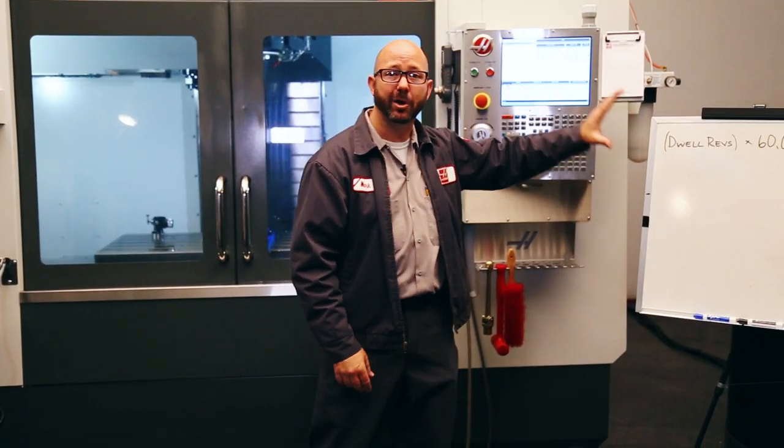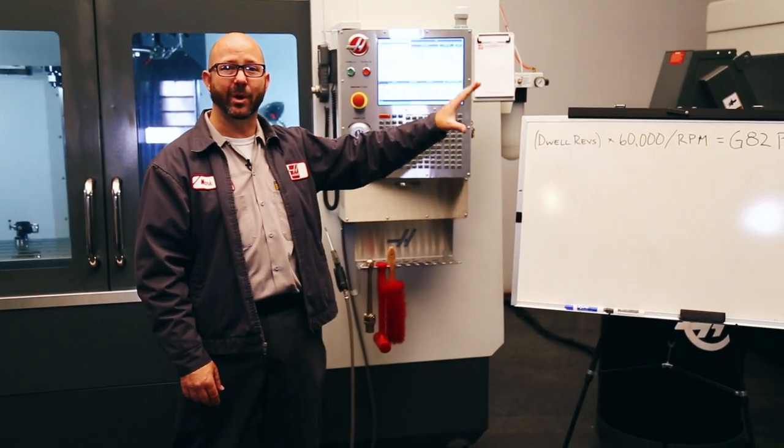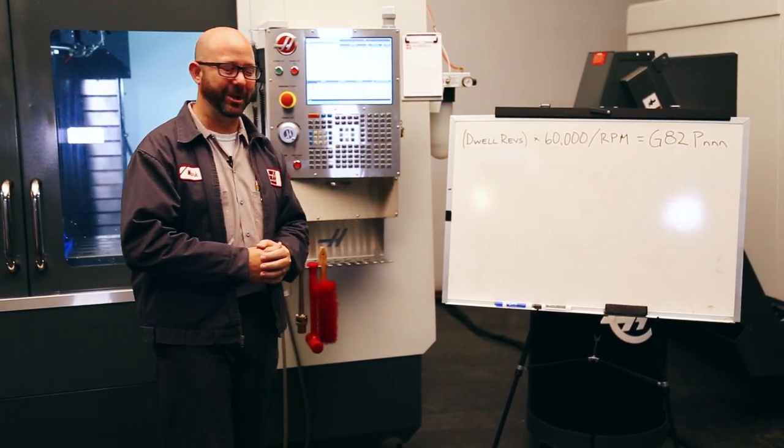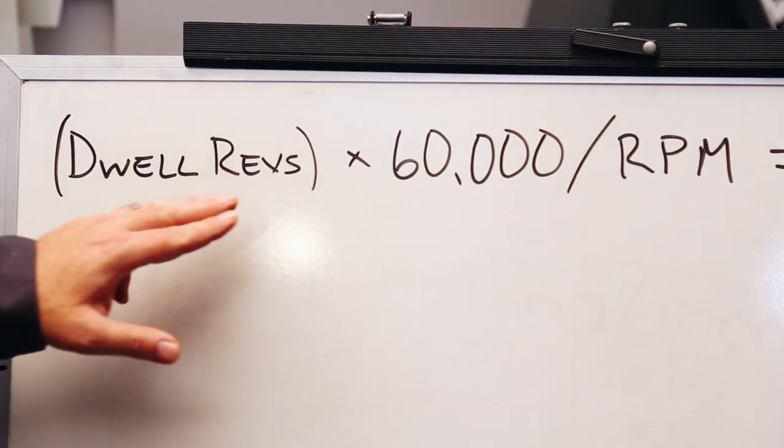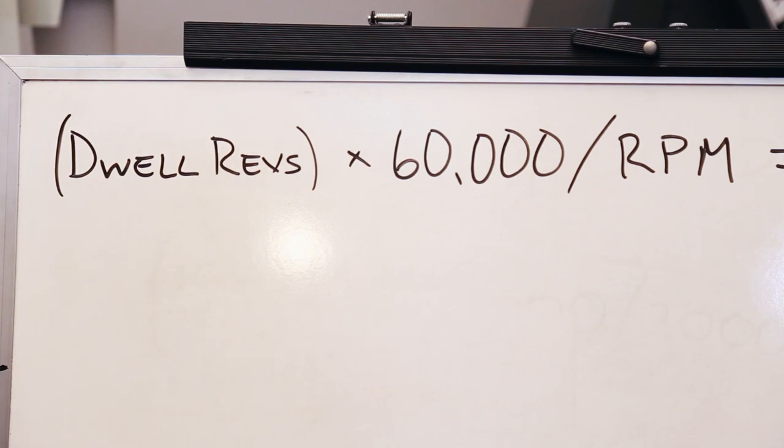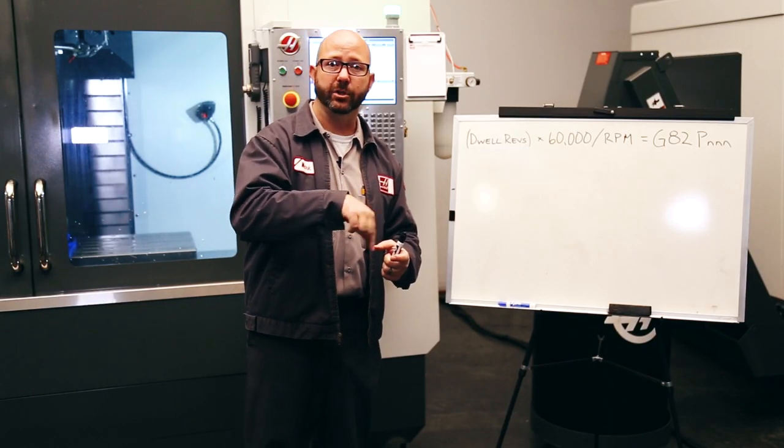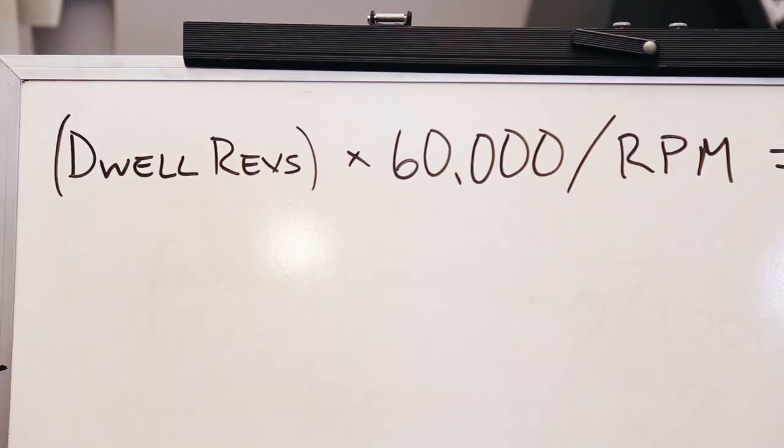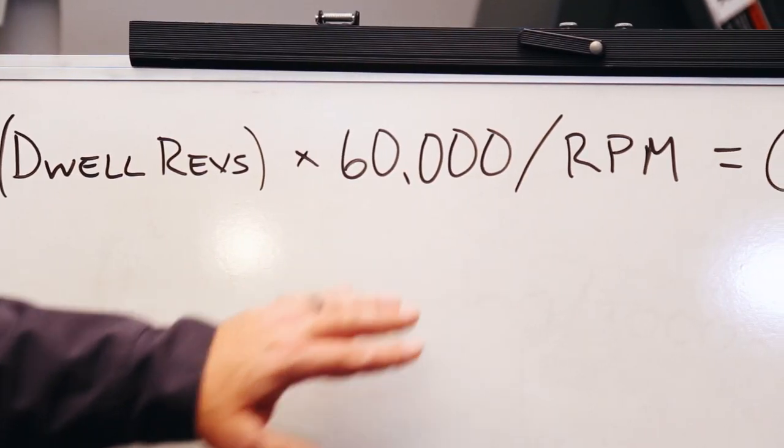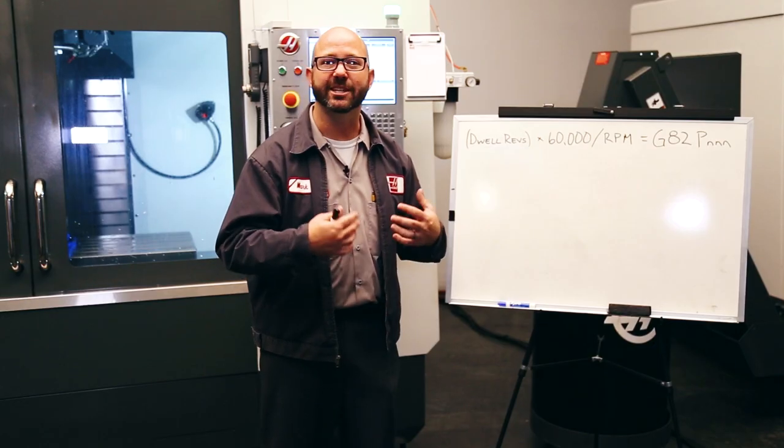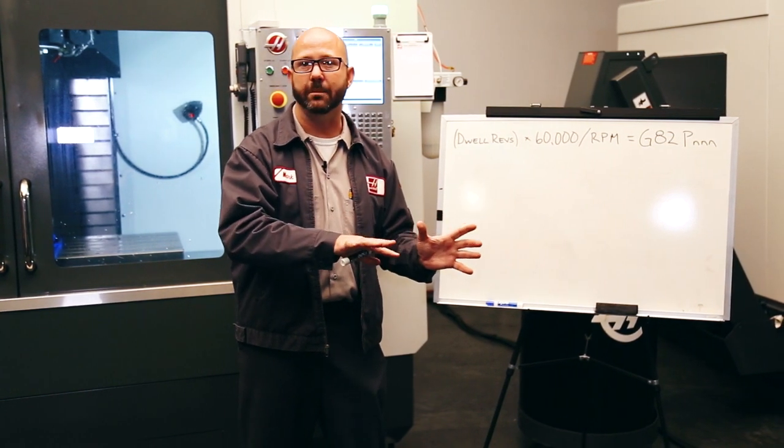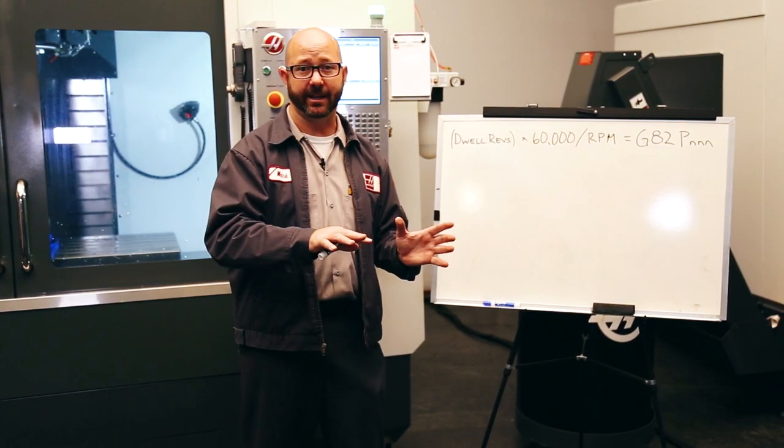So this is why we've got our perfect Goldilocks dwell time formula written out for you. Here's how it works. Our dwell revs, revolutions, is the number of times the tool is gonna make a full revolution at the bottom of the hole. 60,000 is just a conversion factor. This is because there are 60 seconds in a minute and we want our formula to work in milliseconds, not seconds.